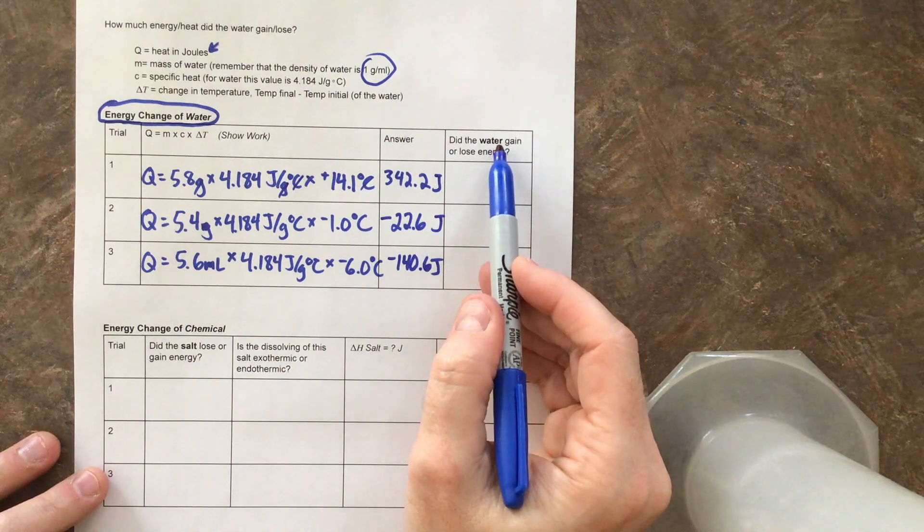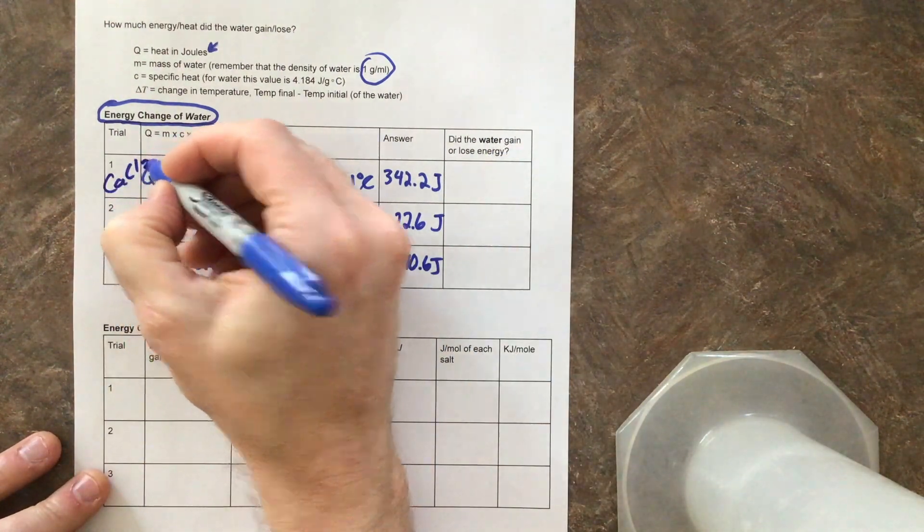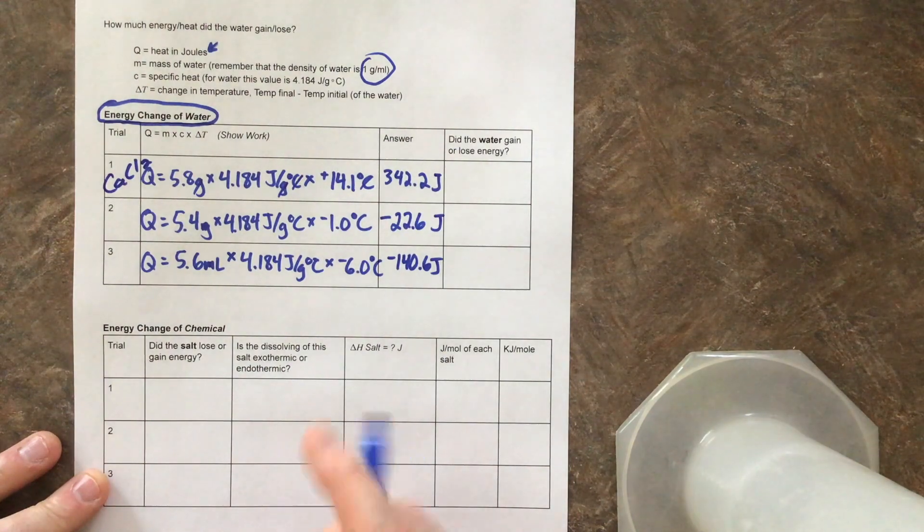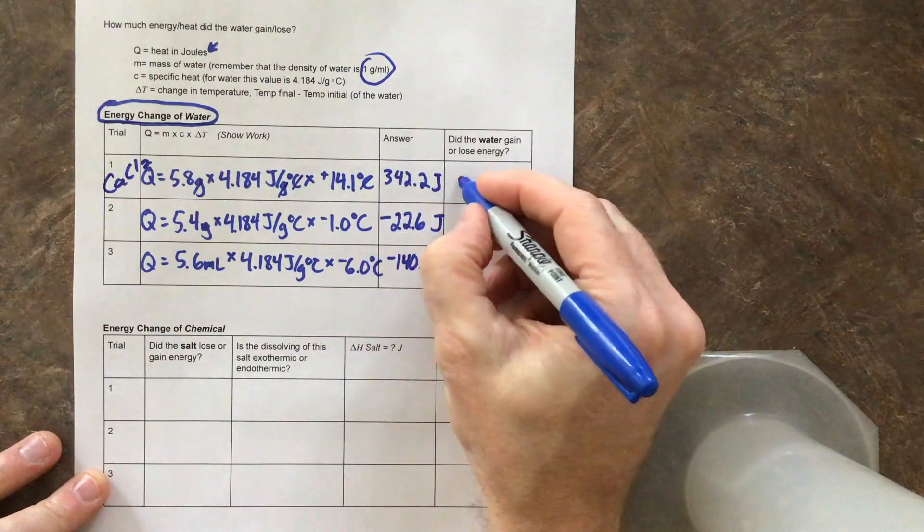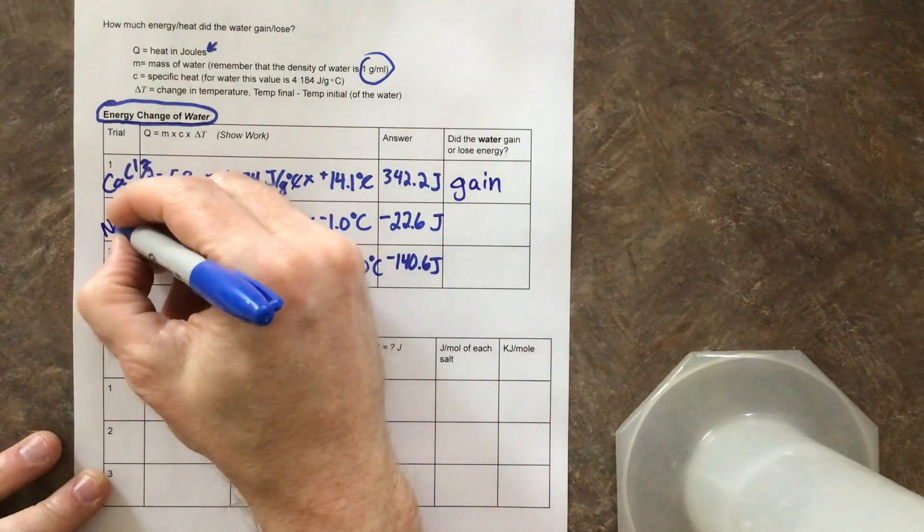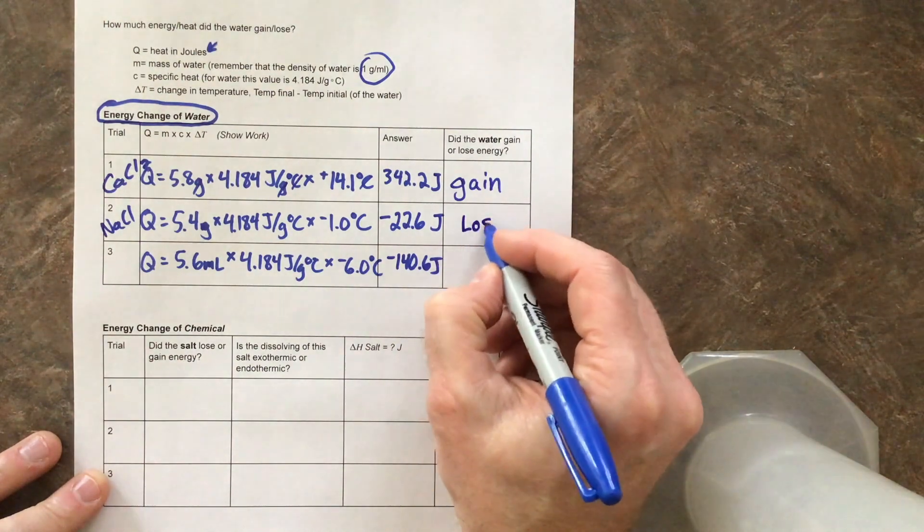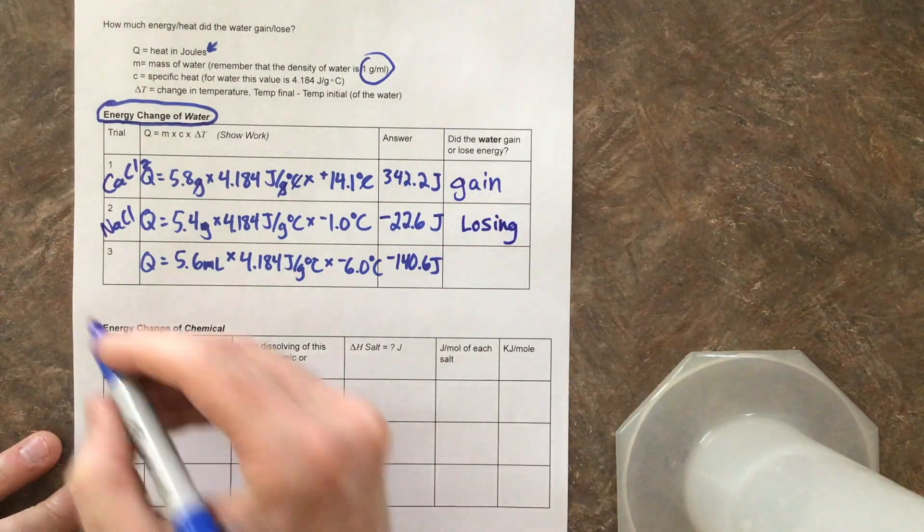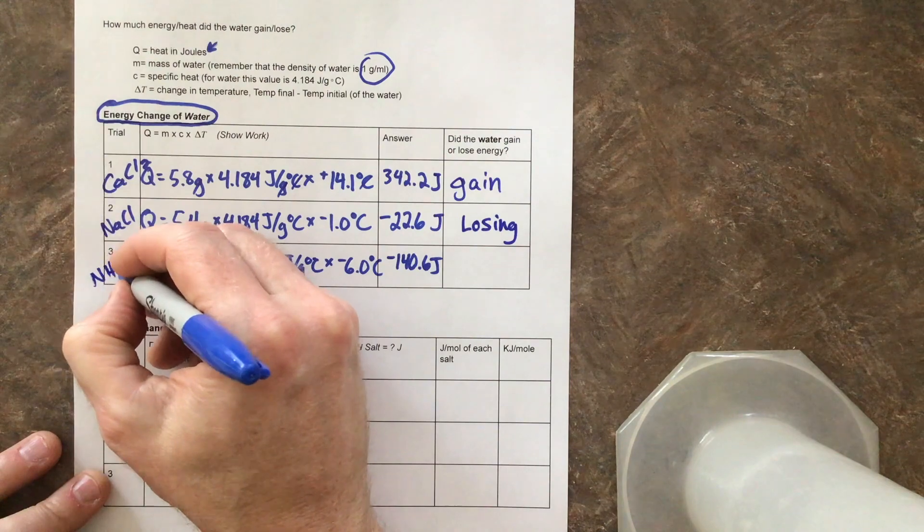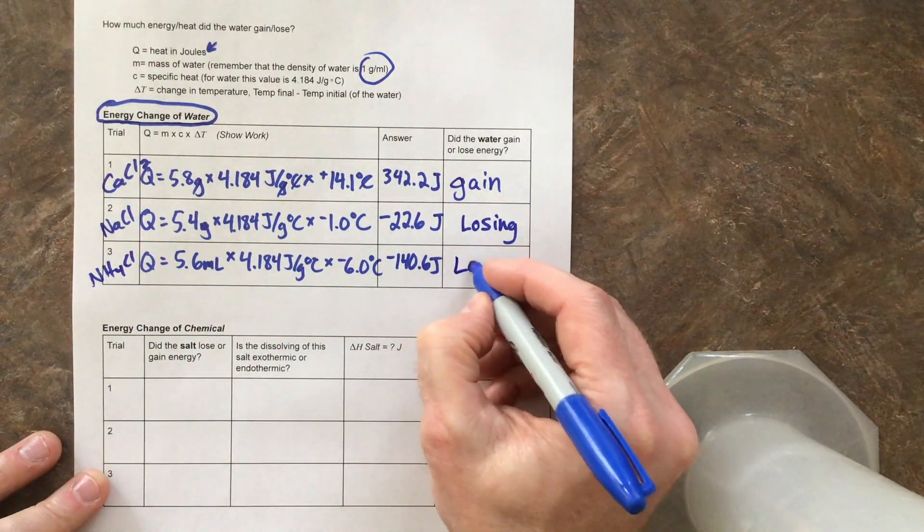Did the water gain or lose energy? Well, in that first situation, when we were dealing with calcium chloride, it got really hot. What was the water doing? The water was gaining energy. The water gained a whole bunch of energy from the salt. If we look at the next case of the NaCl, what was the water doing? The water was actually losing energy. And in the last case with our ammonium chloride, it got colder as well because it was losing energy.